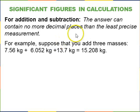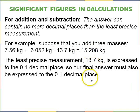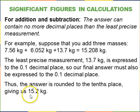For addition and subtraction, the rule is that the answer can contain no more decimal places than the least precise measurement. For example, if you want to add 7.56 plus 6.052 plus 13.7, if you did this in your calculator you get 15.208. However, one of these measurements was only measured to the tenth place, and so you should round your final answer also to the tenth place. So you should report 15.2 kilograms.